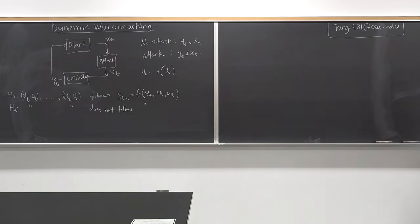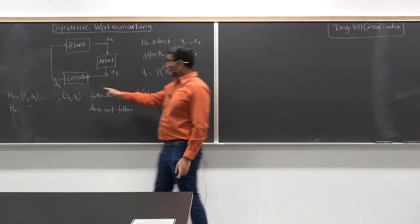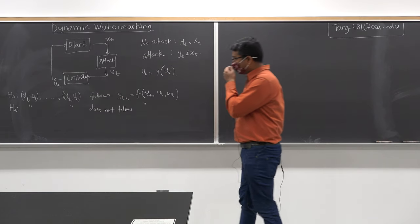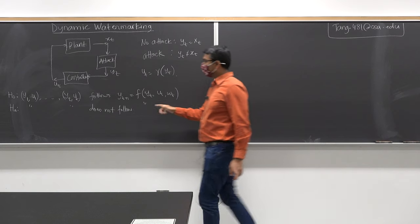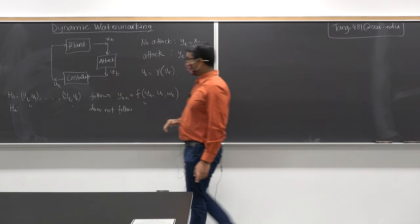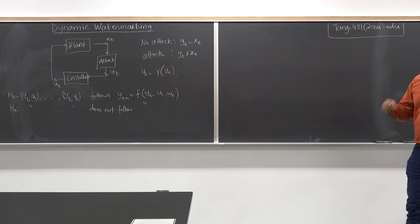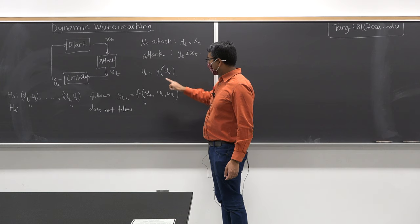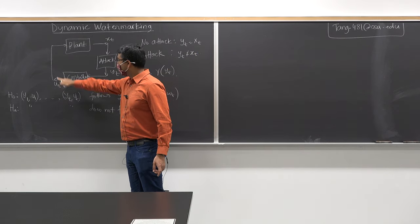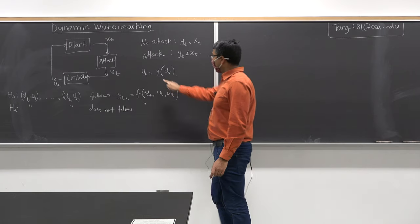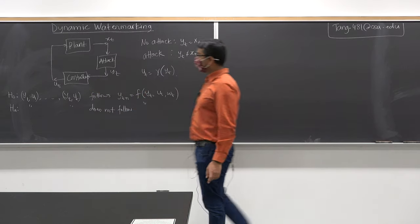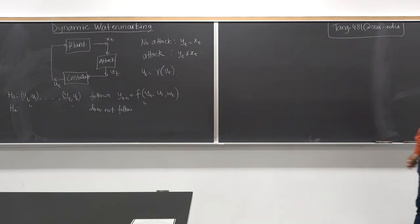There is a problem: if the controller acts deterministically — that is, u_t is a deterministic map of y_t — it is very easy for the attacker to fool the controller. So what the controller needs to do is add some randomization device. It has to pick a randomized policy, because the attacker would not know what actual u_t went into the system. The attacker knows gamma, knows the policy, but does not know the realization u_t being sent to the plant.